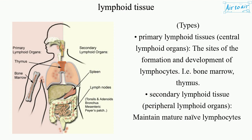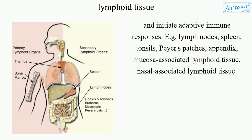Secondary lymphoid tissues — peripheral lymphoid organs — maintain mature naive lymphocytes and initiate adaptive immune responses. Examples include lymph nodes, spleen, tonsils, Peyer's patches, appendix, mucosa-associated lymphoid tissue, and nasal-associated lymphoid tissue.